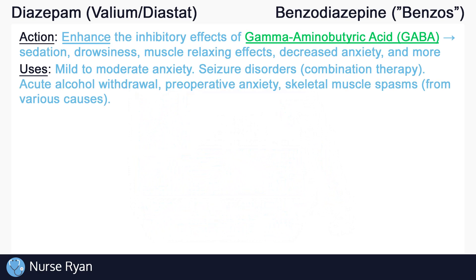Diazepam can also be used in acute alcohol withdrawal, for preoperative anxiety, and as a muscle relaxant for relief of skeletal muscle spasms of various causes. Some off-label uses include insomnia, agitation, and more.